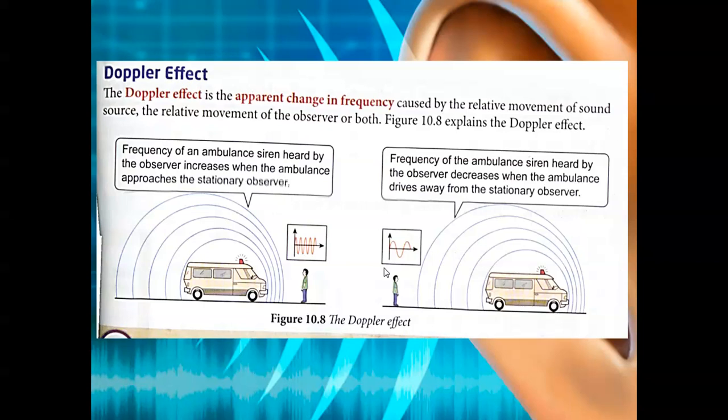Next we are going to look at what is Doppler effect. Doppler effect is the apparent change in frequency. You must remember the word apparent change in frequency. There are four words in the definition for Doppler effect, caused by relative movement of sound source, the relative movement of the observer, or both.